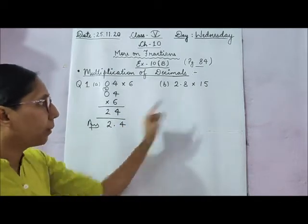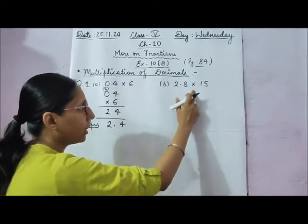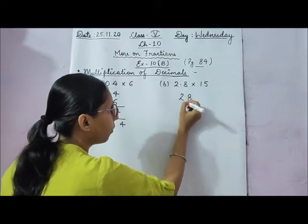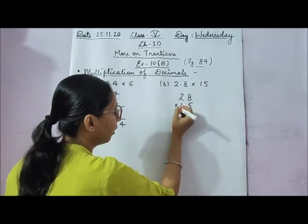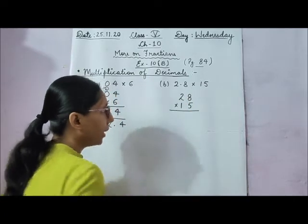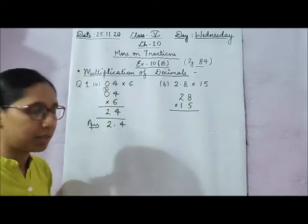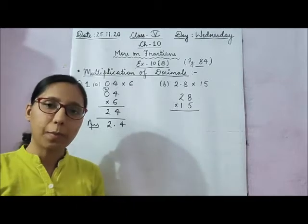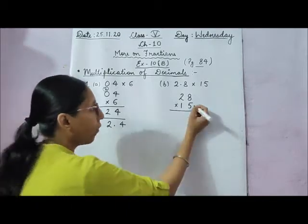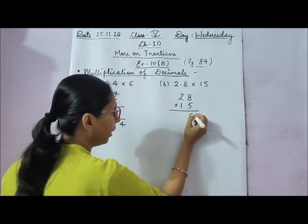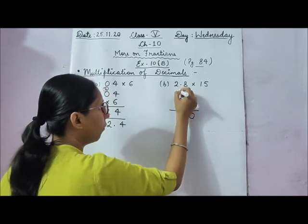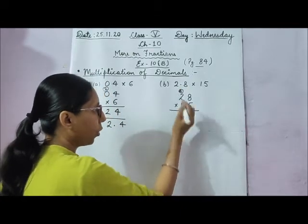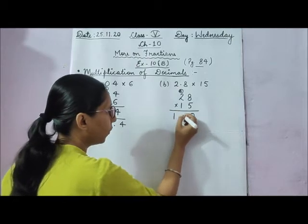Similarly, part b is 2.8 multiplied by 15. We remove the decimal point and multiply like whole numbers. 5 times 8 is 40 — write 0, carry 4. 5 times 2 is 10, plus 4 is 14.